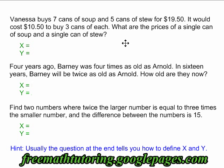In the first example, Vanessa buys seven cans of soup and five cans of stew for $19.50. It would cost $10.50 to buy three cans of each. What are the prices of a single can of soup and a single can of stew?